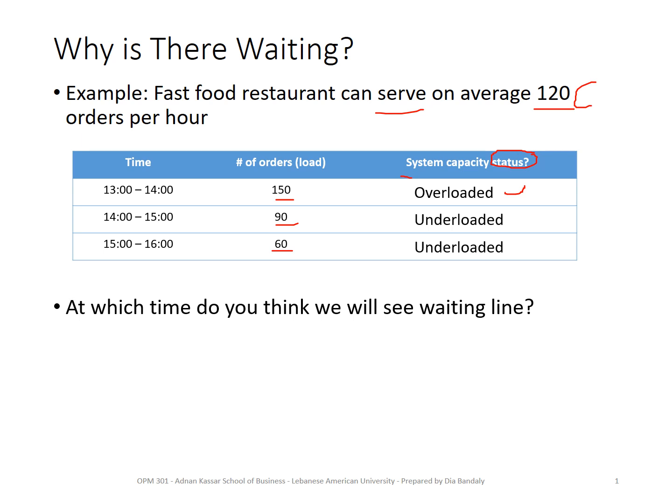Consider the case with the minimum number of 60 orders. That means 60 customers will arrive during one hour, but the distribution of arrivals is unknown. Is it one customer every minute? If so, you may not have waiting lines. But imagine that during the first minute five people just show up. While you can serve 120 orders per hour — that's two orders per minute — if five people show up at once, which is very natural in a restaurant, you become overloaded.